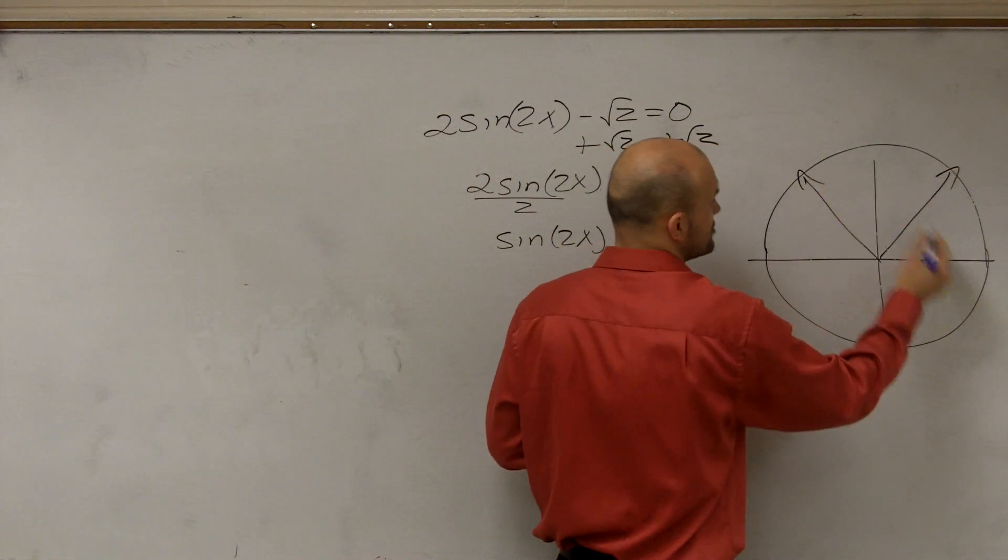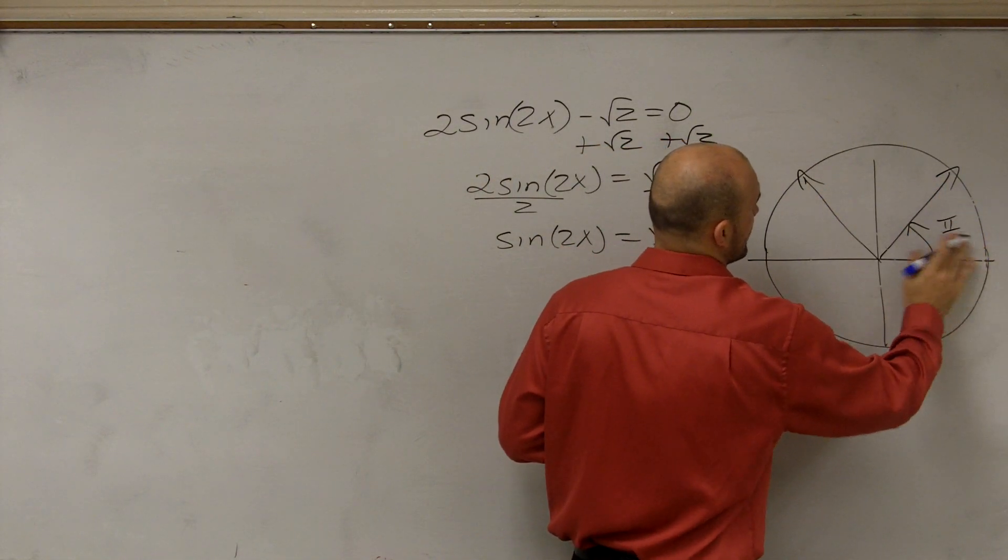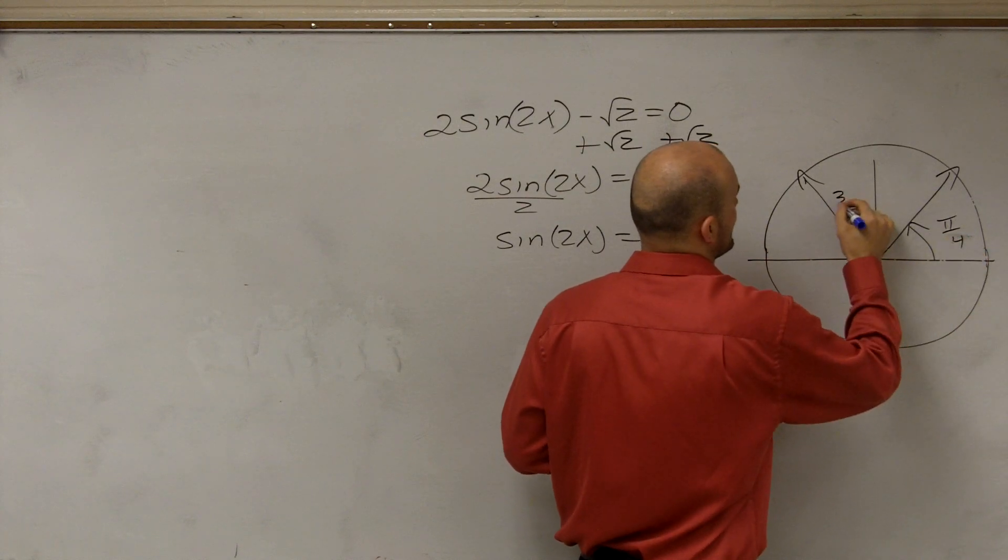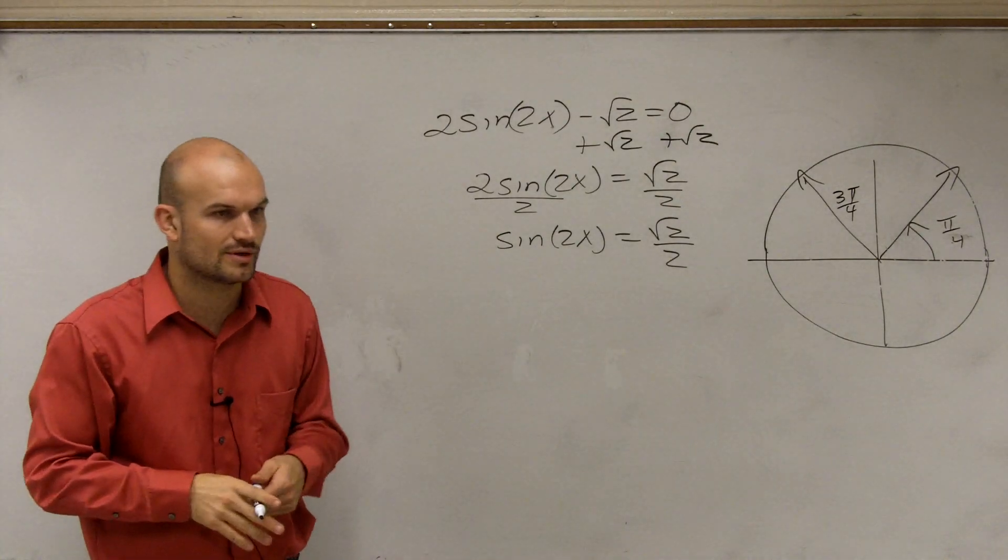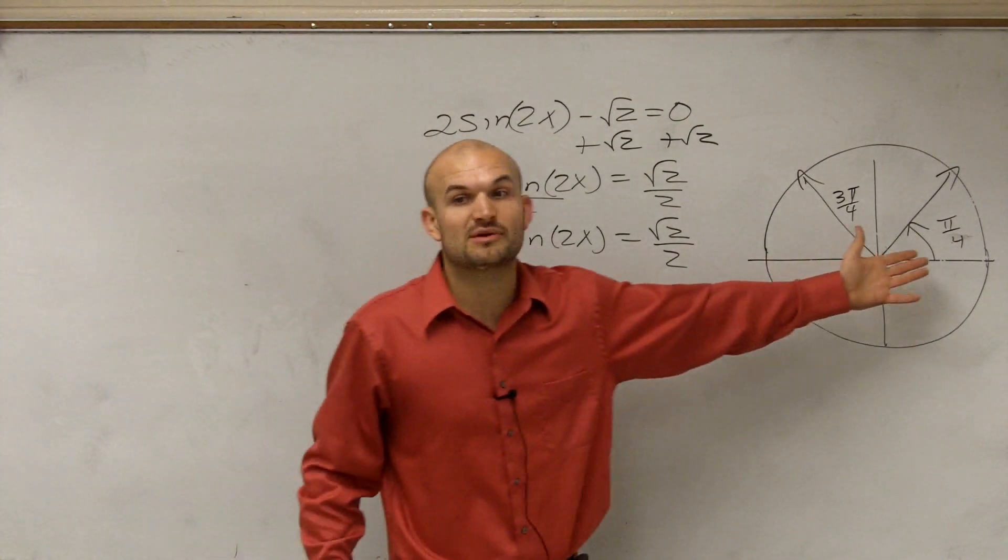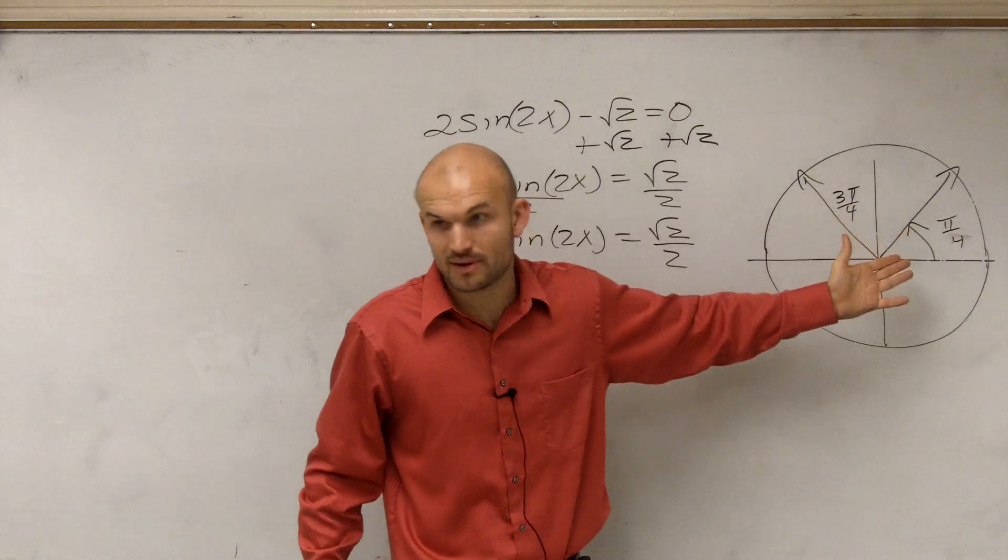You know, we know there's those two points, pi over 4 and 3 pi over 4, right? Those are your two angles where sine equals square root of 2 over 2. And we also said it's going to be plus 2 pi n and plus 2 pi n, right?